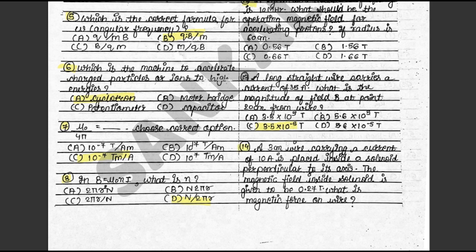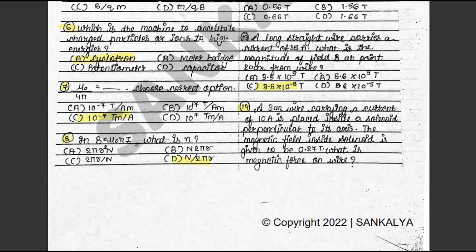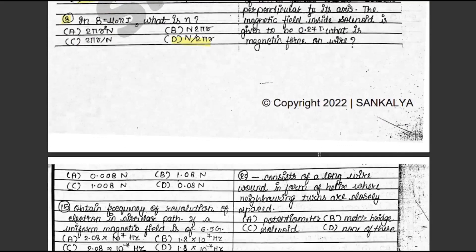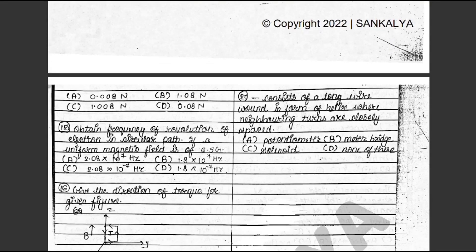Question 14: A 3 cm wire carrying a current of 10 ampere is placed inside a solenoid perpendicular to its axis. The magnetic field inside the solenoid is given to be 0.27 Tesla. What is the magnetic force on the wire? The answer is D: 0.08 N. This is in the textbook exercise 6.